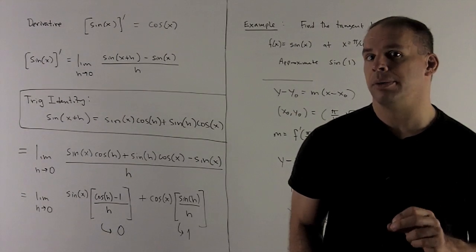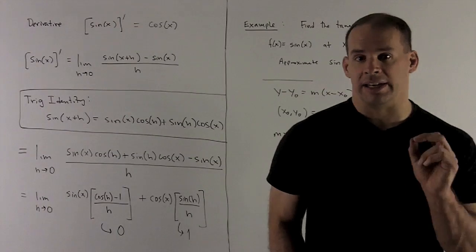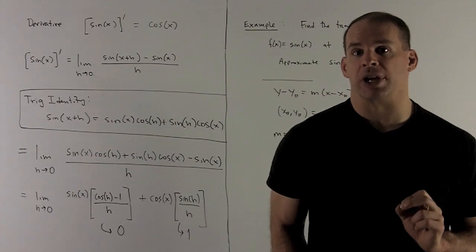So we have limit h going to zero, sine of x plus h minus sine of x over h. I need to get a handle on sine of x plus h, so that's just pulling out a trig identity.